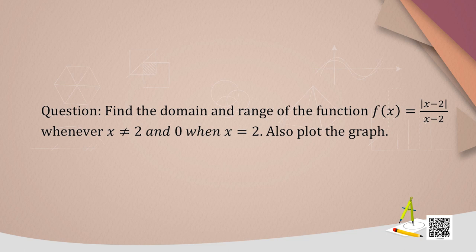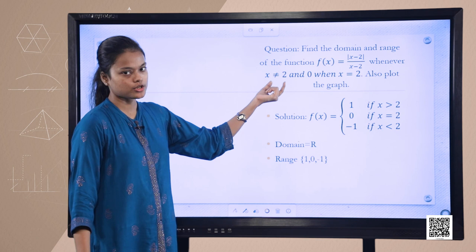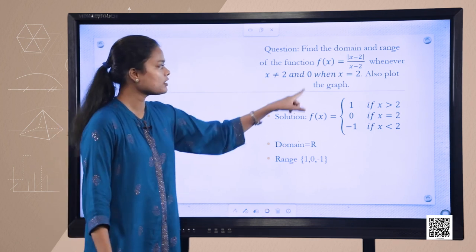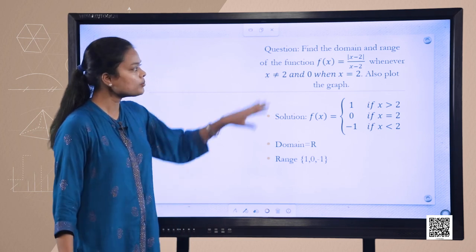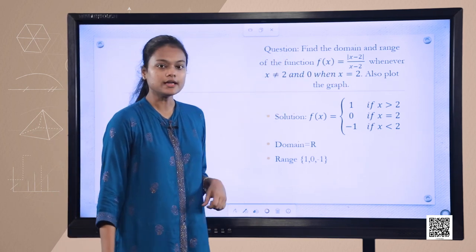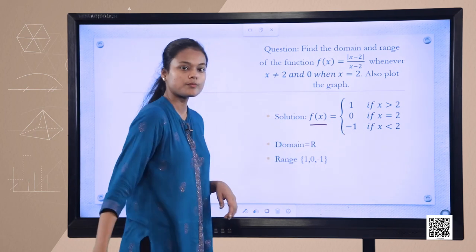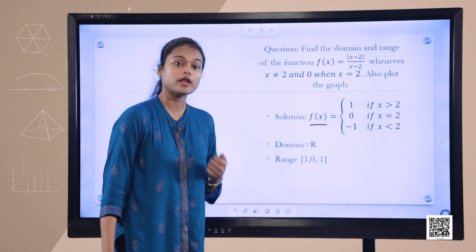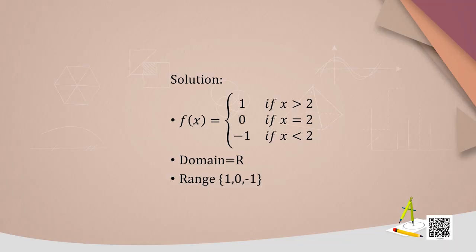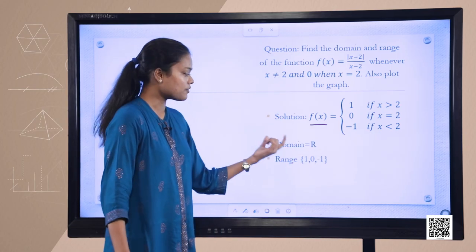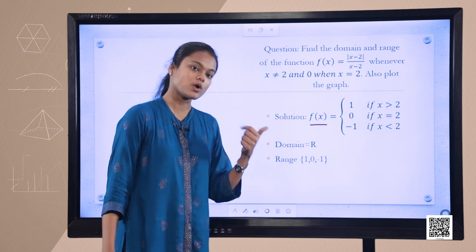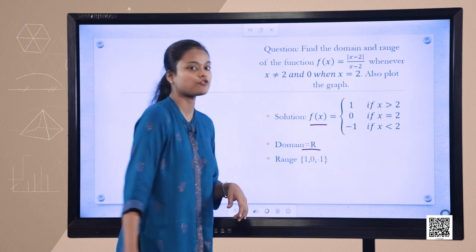Let us take an example where we find the domain and range of f(x) = |x−2|/(x−2) when x ≠ 2, and f(x) = 0 when x = 2. After simplifying, this is equivalent to a signum function. f(x) again takes 3 values: 1 when x > 2, 0 when x = 2, and −1 when x < 2. Range is {1, 0, −1} and domain is the set of all real numbers.